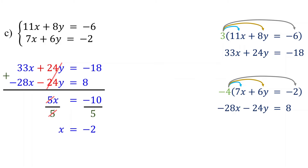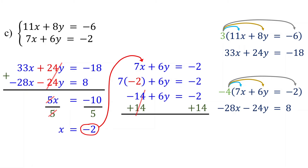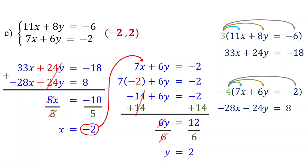Next, calculate the value of y by substituting x equals negative 2 into one of the original equations. Let's use the second equation. 7 times negative 2 is negative 14. Then add 14 to both sides: on the left, these cancel out leaving 6y; on the right, negative 2 plus 14 equals 12. Isolate y by dividing both sides by 6, so y equals 2. As an ordered pair, the solution is (-2, 2).